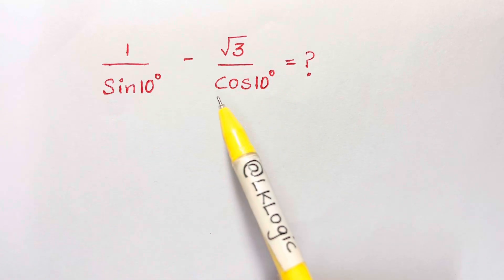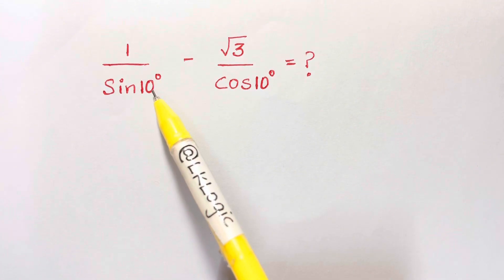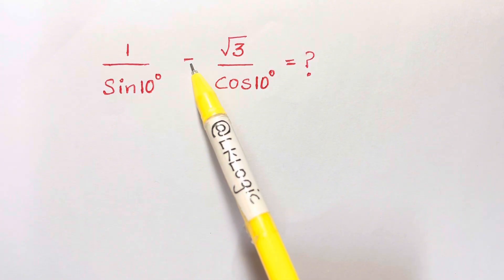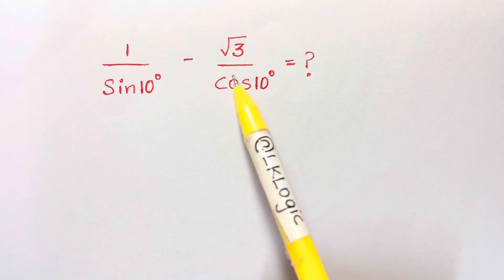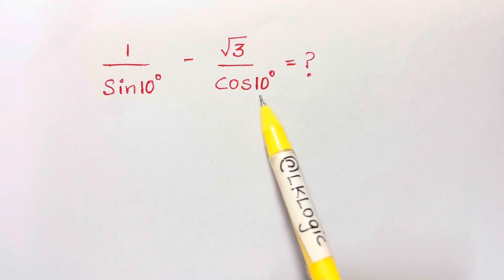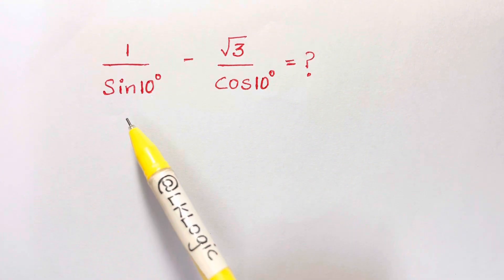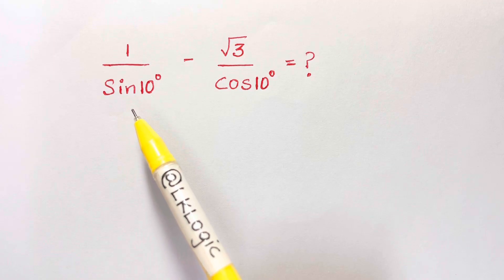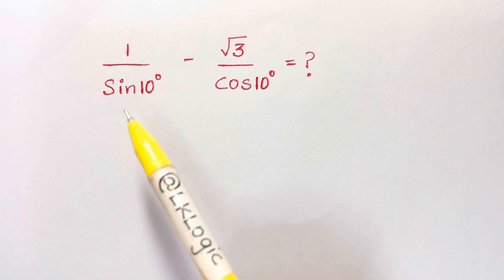Hi guys, I have a nice trigonometric problem for you: 1 over sin(10°) minus √3 over cos(10°) equals what? Try solving it and then keep watching for the solution.